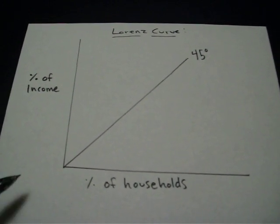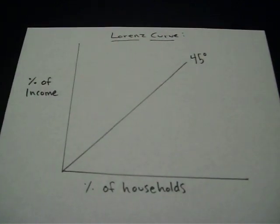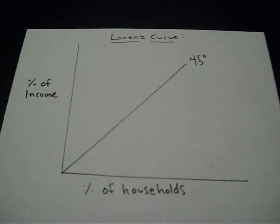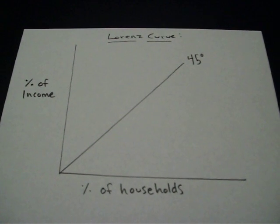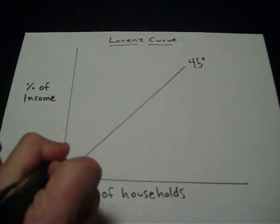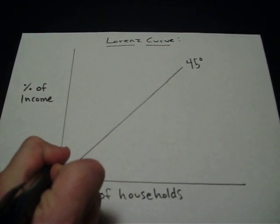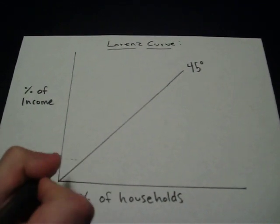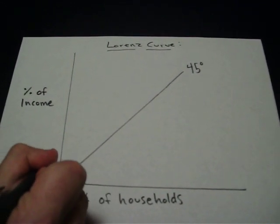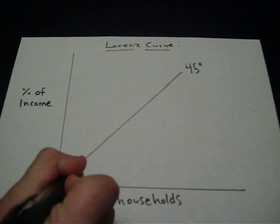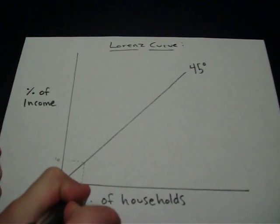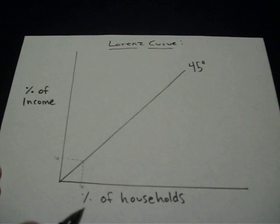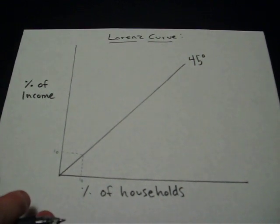I've also drawn in a 45-degree line for reference. The Lorenz Curve at 45 degrees is showing that everybody is equal. If we look right here, let's say that this is 10% of the income and 10% of the households. So 10% of the households are getting 10% of the income.